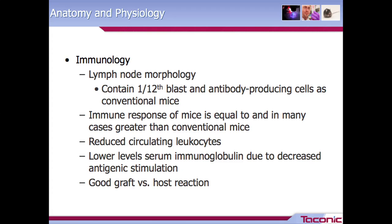From an immunology perspective, regarding lymph node morphology, germ-free animals contain one-twelfth of the blast and antibody-producing cells compared to conventional animals. However, this lower number of antibody-producing cells is not an indicator of reduced immune function. Their immune function is normal, and their immune response is equal to — and in many cases greater than — that of conventional mice. These animals do have reduced circulating leukocytes and lower serum levels of immunoglobulin due to decreased antigenic stimulation. For investigators interested in transplant research, they do have good graft-versus-host reaction.